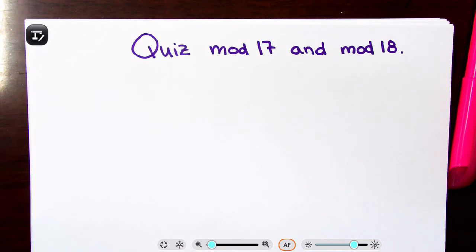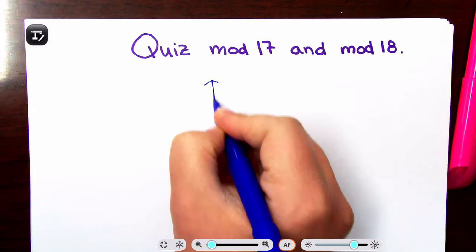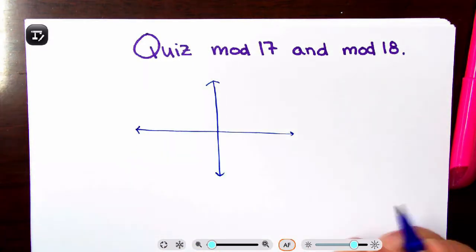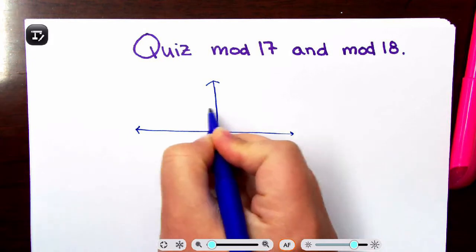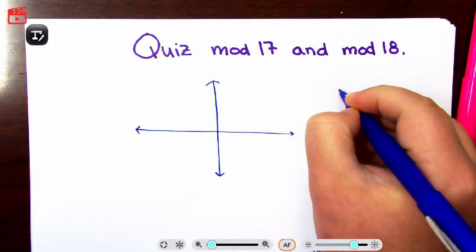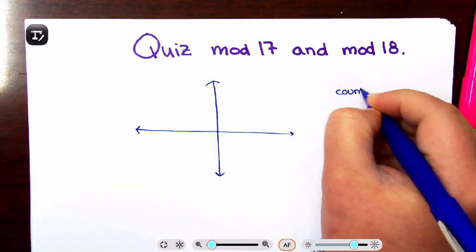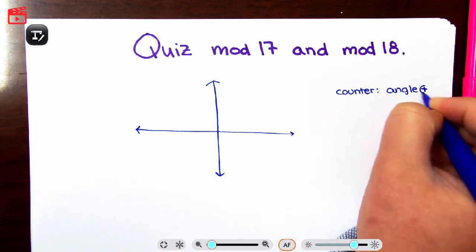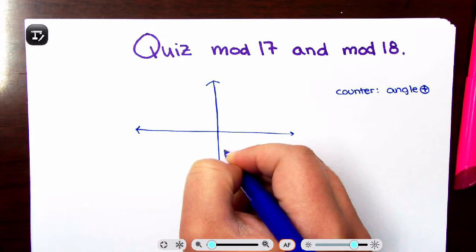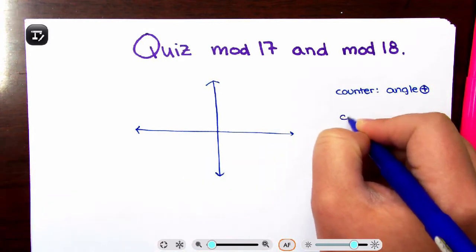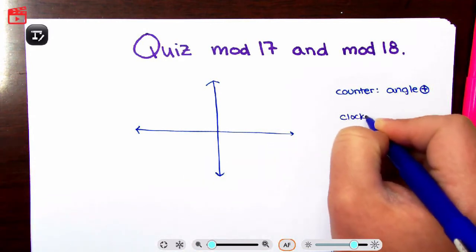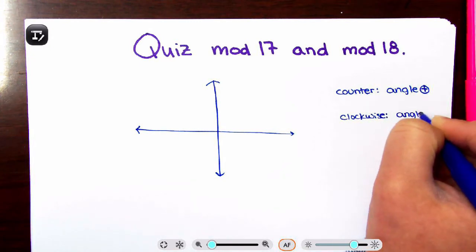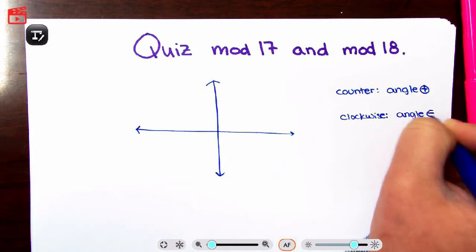The first thing I want to go through is angles. We're going to draw out here our x and our y. Recall that if you go towards the positives, you are going counterclockwise and your angle is going to be positive. If you're going towards the negatives, you're going clockwise and your angle is going to be negative.